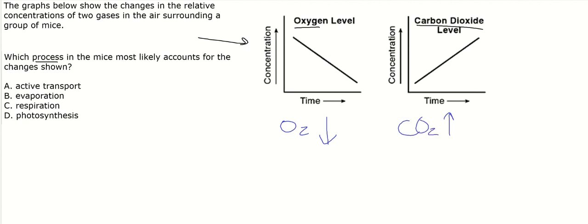Well, we can eliminate active transport. Oxygen and carbon dioxide both are transported through simple diffusion or passive transport. So it's between cellular respiration and photosynthesis.